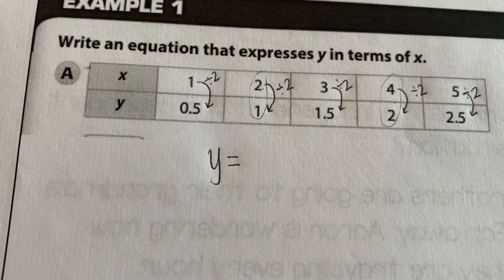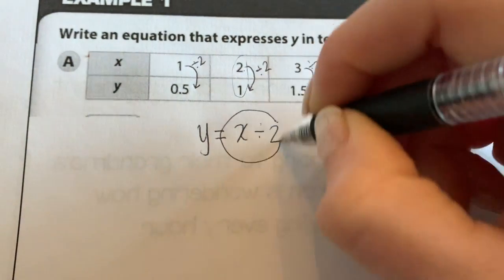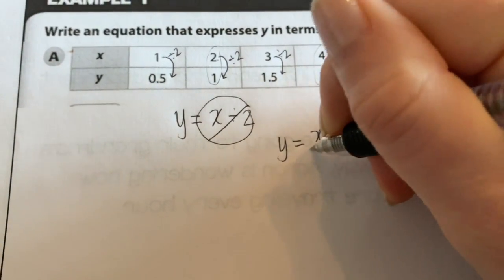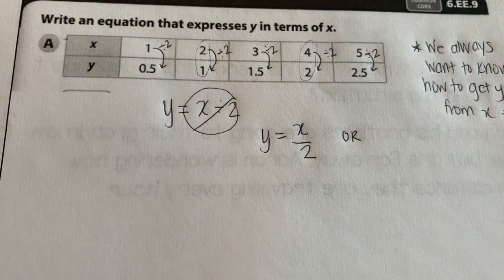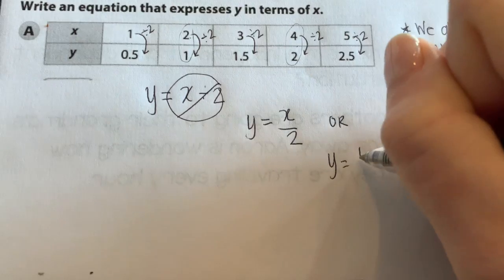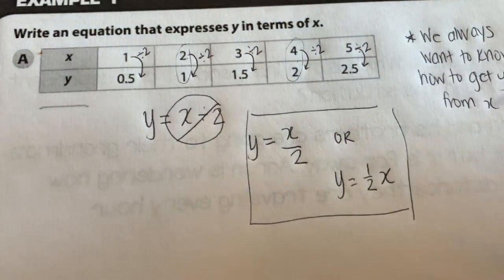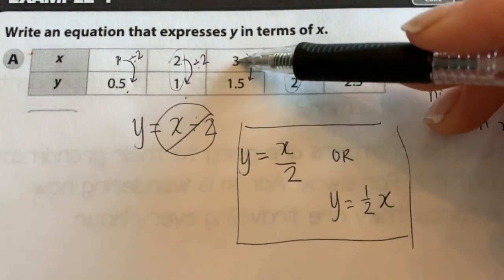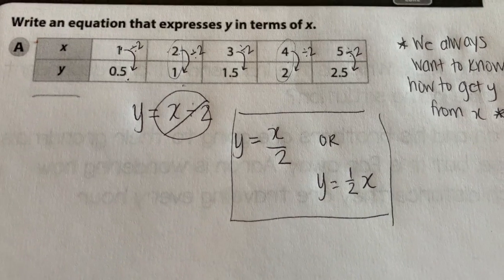We're not going to be writing x divided by 2, because this is a no-no in algebra now. There's two ways that we could write this. We can either do y equals x divided by 2. Or, remember from 5th grade, dividing is the same as multiplying by the reciprocal. So we could also write this as y equals one-half times x. Either one of these is going to be correct. In algebra, this is how we would have written it, so you might want to get used to doing that.